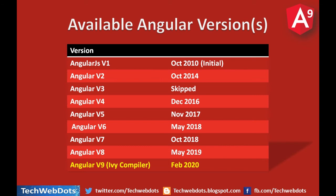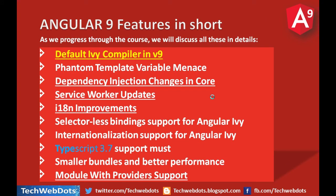What's new in Angular 9? The new features include the default Ivy compiler, phantom templates, dependency injection, service worker updates, i18n improvements, service decorator, less binding, TypeScript smaller bundles, better performance, and module with provider support. As we progress through this course I will discuss each and every new feature of Angular 9.